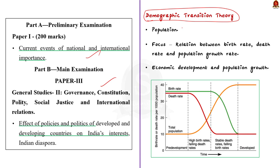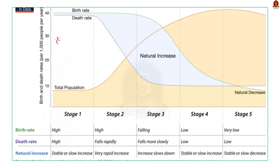Demographic transition theory is basically a population theory which focuses on the general relationship between birth rate, death rate, and population growth rate as a country or society moves from the pre-modern setup to a post-modern setup. The theory focuses on the relationship between economic development of a country and the country's population. According to the demographic transition theory, there are basically four stages. The first stage is the high stationary stage. Most pre-developed countries are present in this stage. India in the early part of the 20th century was in the high stationary stage. In this stage, there will be high birth rates and high death rates — both stable — resulting in very slow growth.